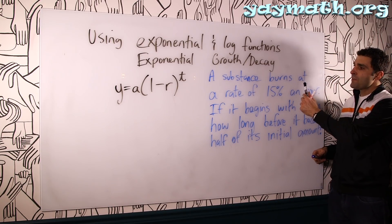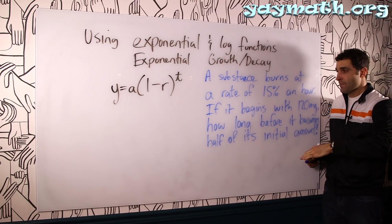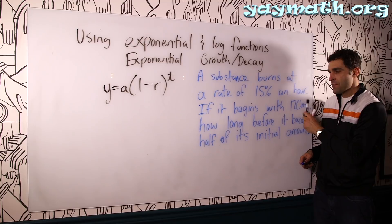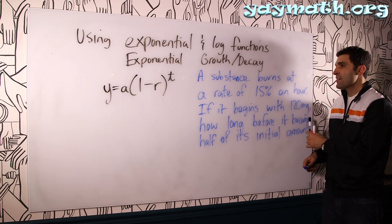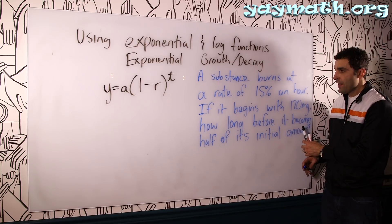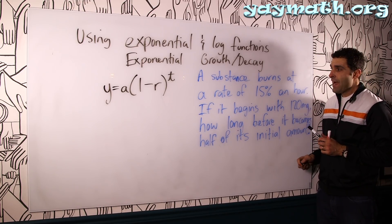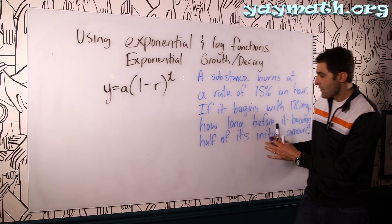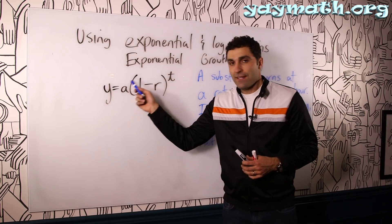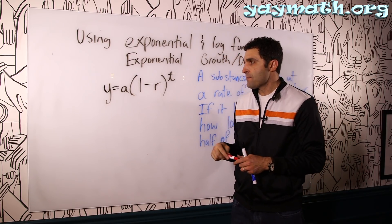A substance burns at a rate of 15% every hour so it's decreasing. If it begins with 120 milligrams, how long before it becomes half of its initial amount? It's kind of a cool question if something is going down 15% every hour and the formula that we can use to discover that amount of time is right here. So let's dissect what each of these values means.